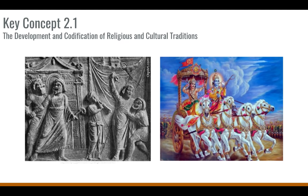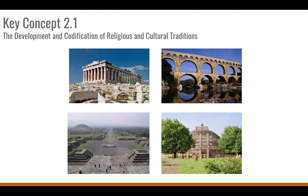Literature and drama were distinct forms that influenced architectural development and cultural traditions in this time period. In India, epic stories like the Bhagavad Gita were especially important for the development of Hindu beliefs, shaping mythical beliefs and religion. There are also distinctive architectural styles that develop: the Parthenon in Greece, the aqueducts of Rome, pyramids in Mesoamerica, and Buddhist stupas.